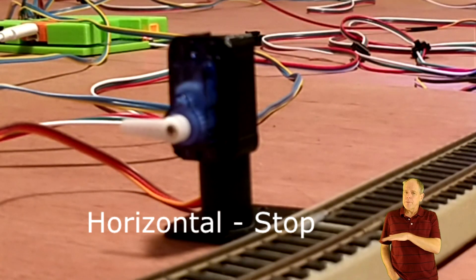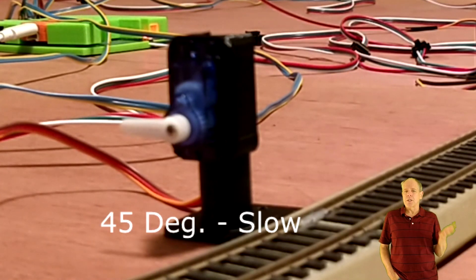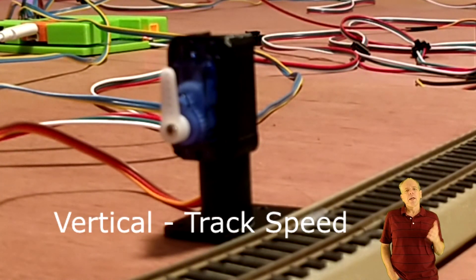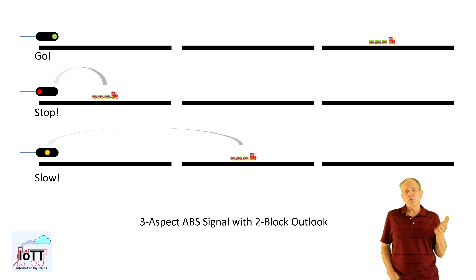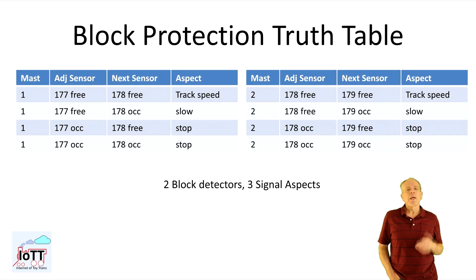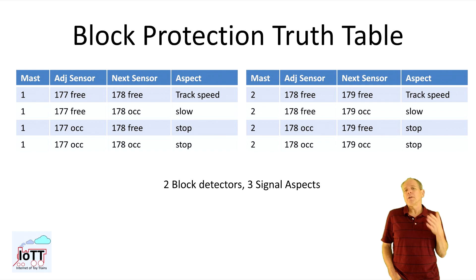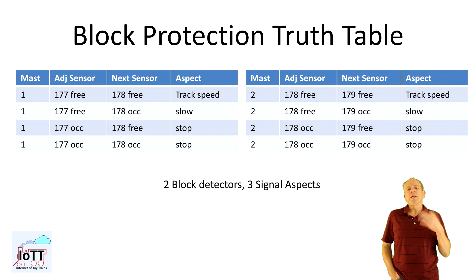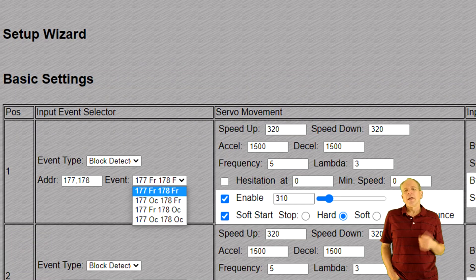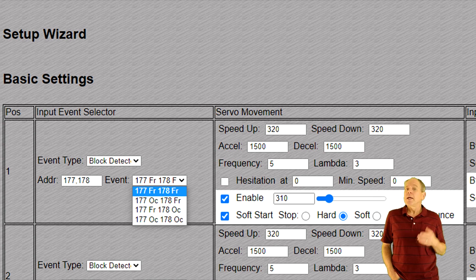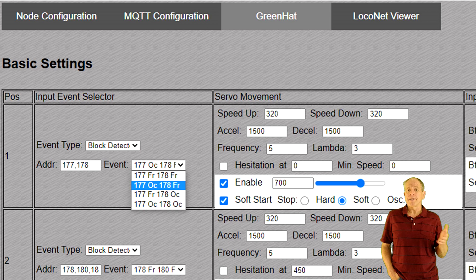For demonstration purposes I make the servos act as three-aspect signals: horizontal means stop, 45 degrees is slow, and vertical means go with track speed. Three aspects means the signal needs to watch the next two block detectors and sets the signal position according to a truth table. If both blocks are free it should show track speed; if the adjacent block is occupied it should show stop; and if the adjacent block is free but the next block is occupied it should display the slow aspect. In the configuration dialog I enter the numbers of the two block detectors the signal should protect.